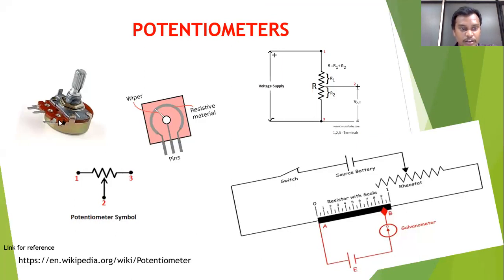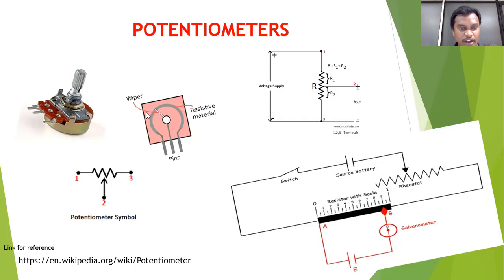Coming to the pot — a pot has three terminals and one knob. This is the symbol for the pot: terminal 1, 2, 3, and a variable knob. This is an internal block diagram of the pot. If the knob is varied, the contact resistance varies, the resistance varies, and then the output voltage varies.